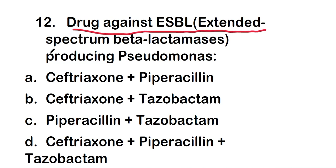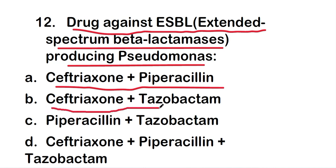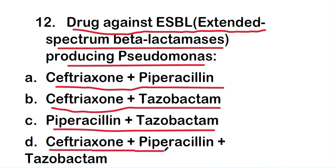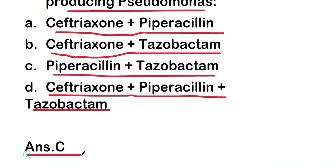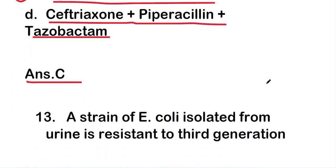The next question: drug against ESBL — extended spectrum beta-lactamase — producing Pseudomonas. Options are ceftriaxone plus piperacillin, ceftriaxone plus tazobactam, piperacillin plus tazobactam, or ceftriaxone plus piperacillin plus tazobactam. The right answer is option C — piperacillin plus tazobactam.